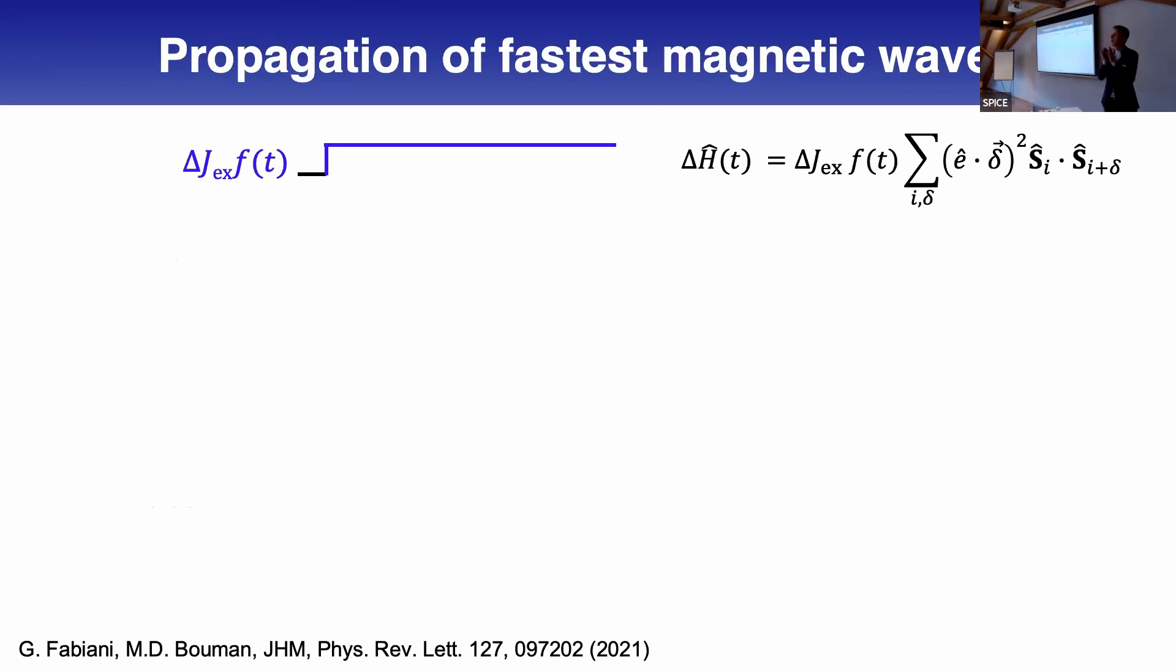Then we investigated the propagation of magnons as function of space and time. For this purpose, I took a single quench—the result is the same with a more realistic pulse. We use this perturbation of exchange inspired from this Raman tensor. To understand the propagation, we look at the correlation function. If you would like to understand how long it takes for information to propagate, you look at how long it takes for a spin at site i to be correlated with a spin at site j.